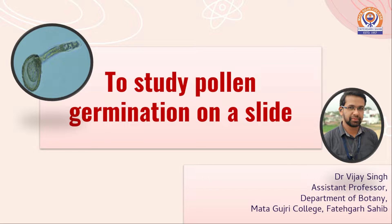Pollen is basically a cell signaling the male gamete associated with reproduction in flowering plants. Plants release millions of pollen grains and these fertilize with the ovule or egg cell to form a zygote and subsequently an embryo. These embryos represent the seed from which a new plant can grow.